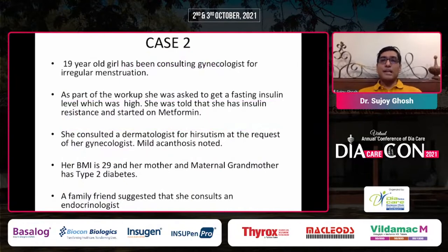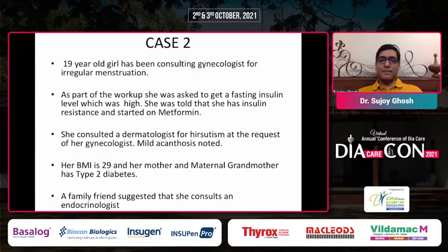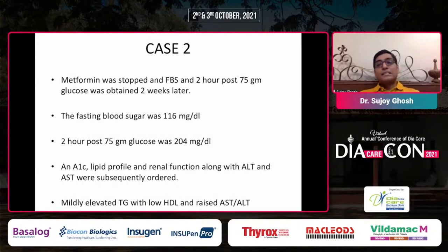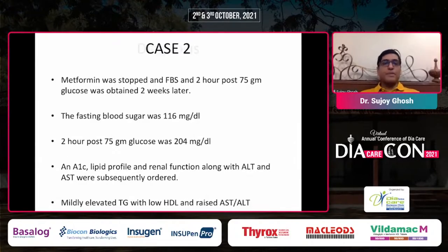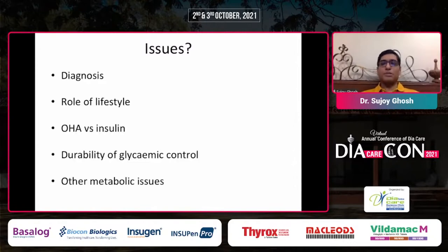Case 2: A 19-year-old girl consulting a gynecologist for irregular menstruation had a high fasting insulin level and was started on metformin for insulin resistance. She had hirsutism, acanthosis nigricans was noticed, and BMI was high. Her mother and grandparents have type 2 diabetes. After stopping metformin and doing an OGTT, type 2 diabetes was diagnosed. HbA1c, lipid profile, renal function, AST, and ALT were all deranged. Key indicators of type 2 in children include absence of insulinopenia, features of insulin resistance, fatty liver, and dyslipidemia.